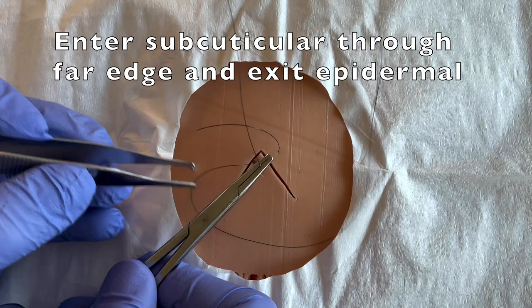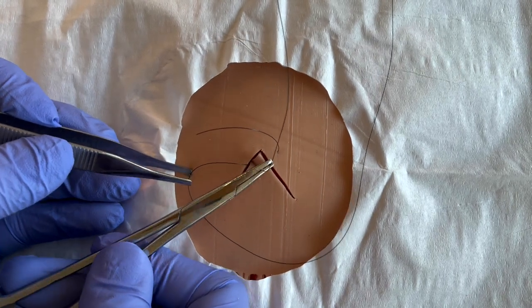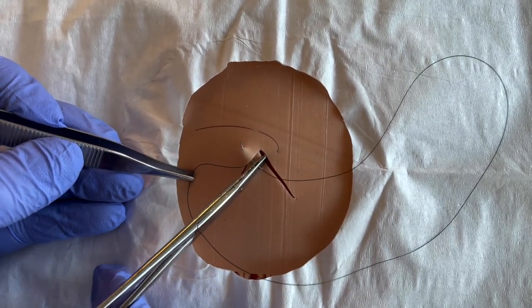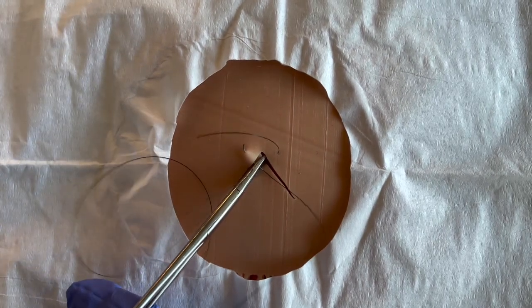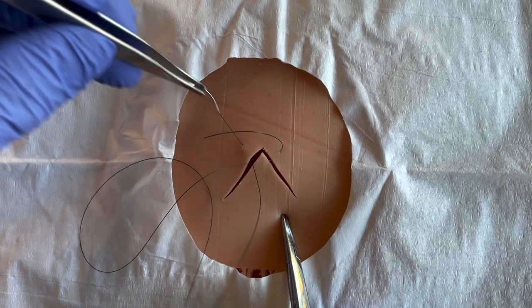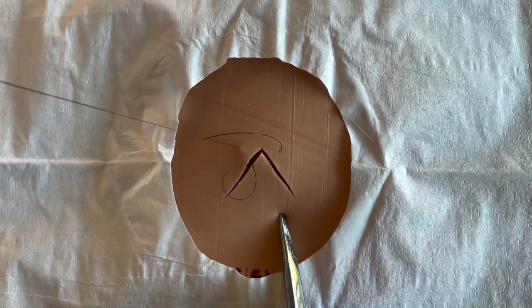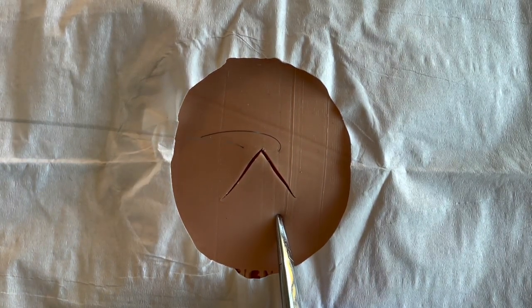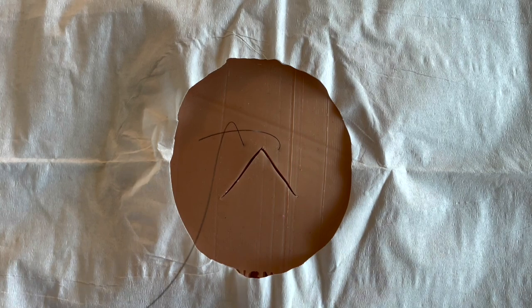Again, be mindful to stay in the same plane with your entry point subcuticular as you were for that subcuticular throw through the flap. You'll exit such that your exit point is directly across from your very first entry point.